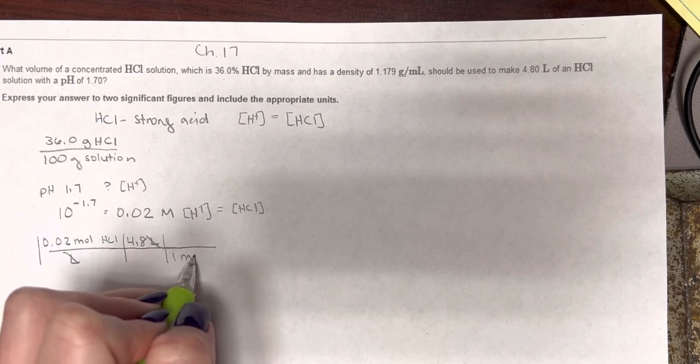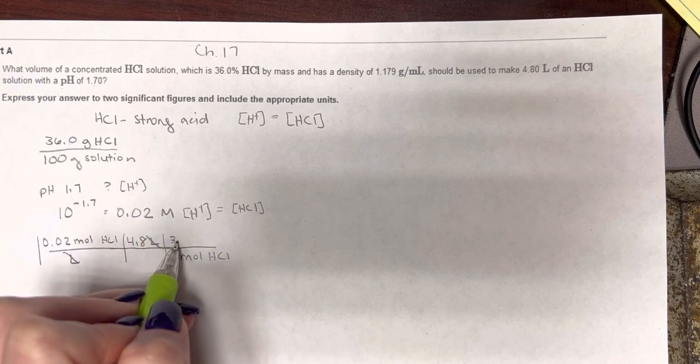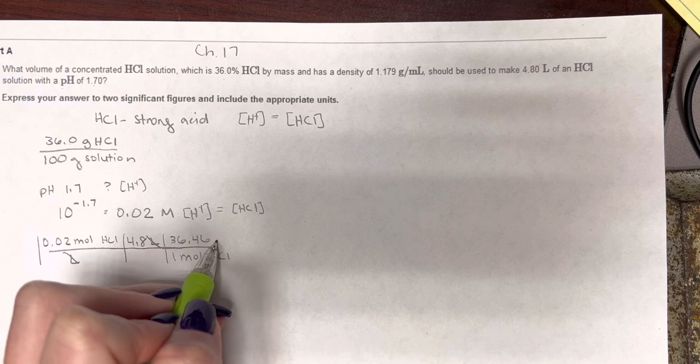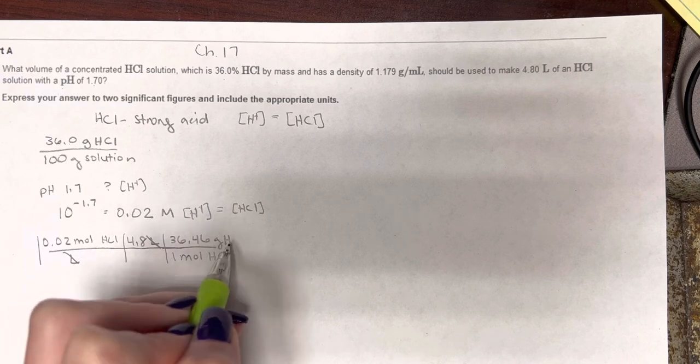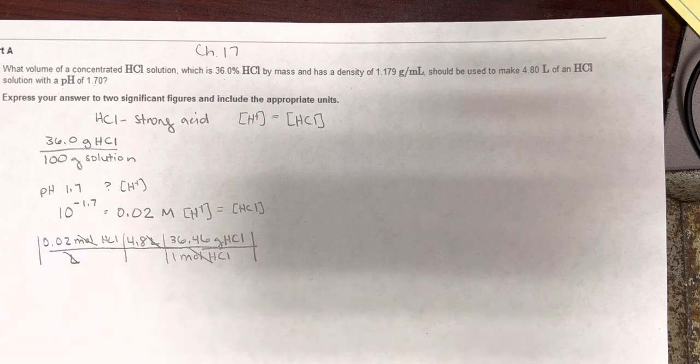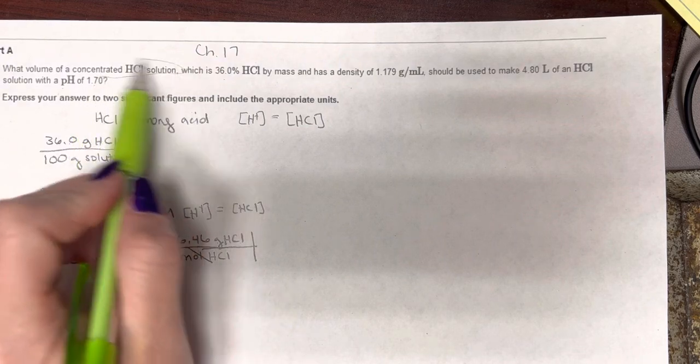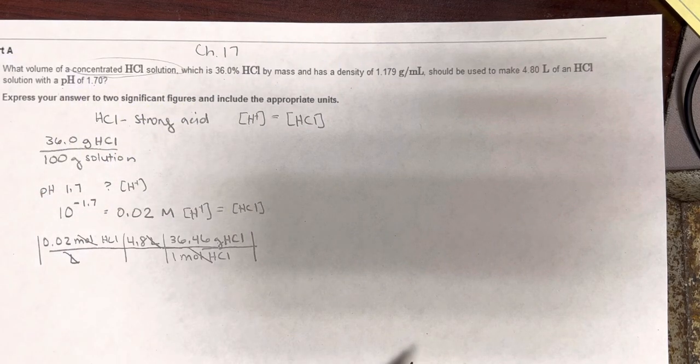So, using the periodic table, 1 mole of HCl, I'm going to use 36.46. Now, I've got grams of HCl. But, I'm trying to get to concentrated solution.